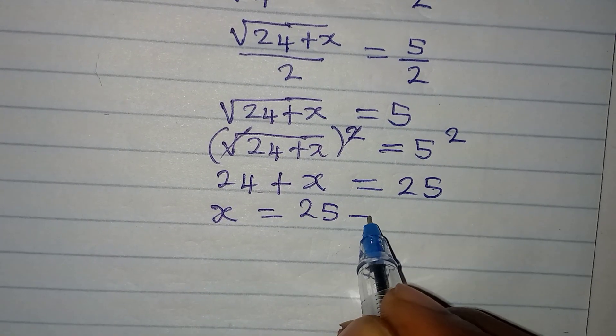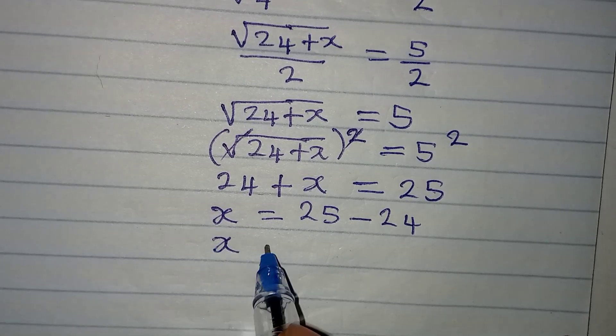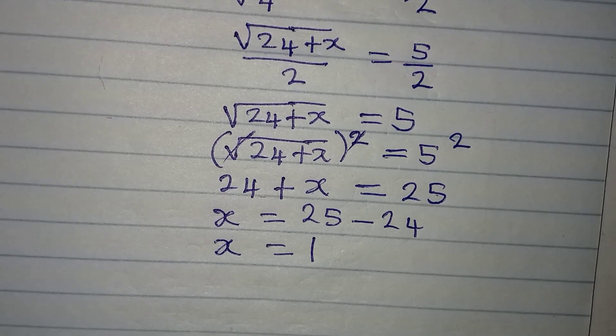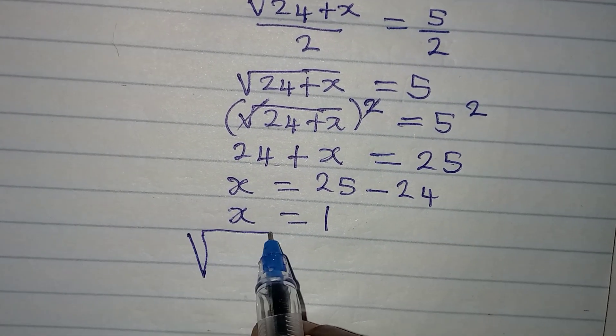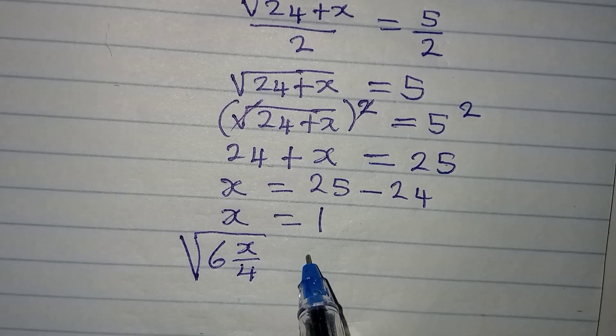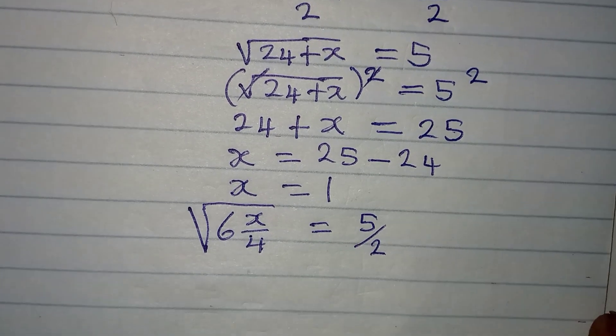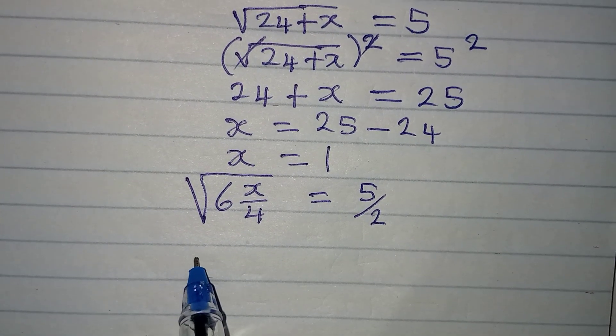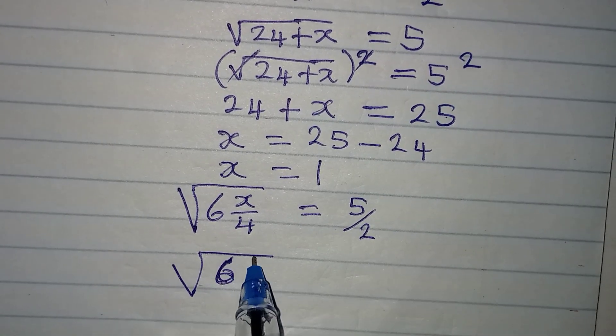But can this be correct? Let's go back to the original equation. We got 6 whole number x over 4 to be equal to 5 over 2. Now let me deal with the left-hand side. This is going to be square root of 6 whole number 1 over 4.